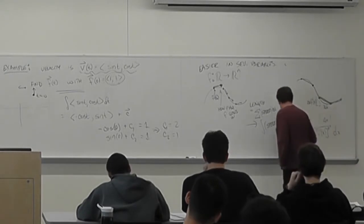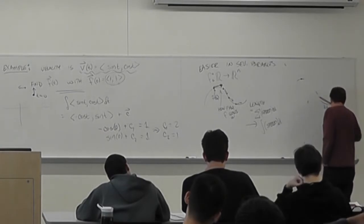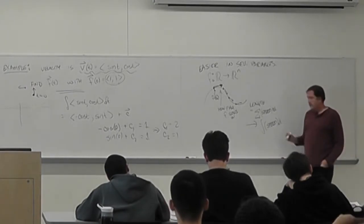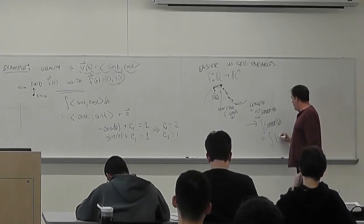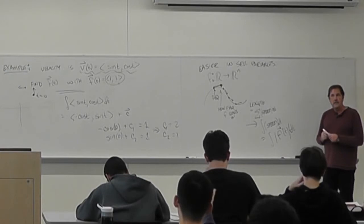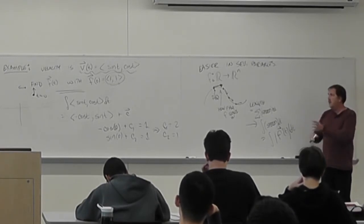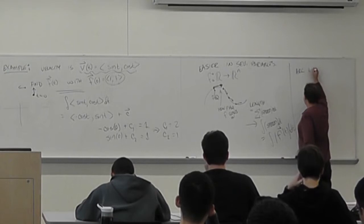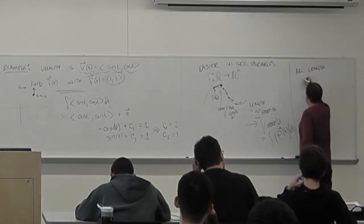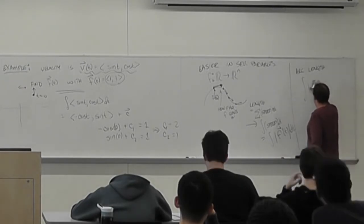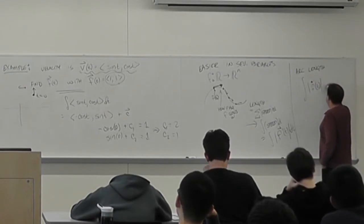That formula becomes very simple: the speed is the length of the velocity vector — I don't care which way it goes, I just care how long it is. So the arc length is just the integral of |velocity vector| dt.